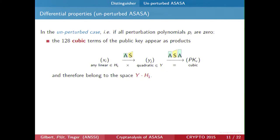First, assuming no perturbation polynomials, we look at how we obtain the cubic terms in the output. The cubic terms are made by the S layers, which are quadratic functions using as inputs the quadratic terms. To make a term of degree 3 at the output, you must multiply a term of degree 2 by a term of degree 1. So all cubic terms in the output belong to this space — they are linearly generated by the products of the yj by any linear form. This space is something we can attack and identify.